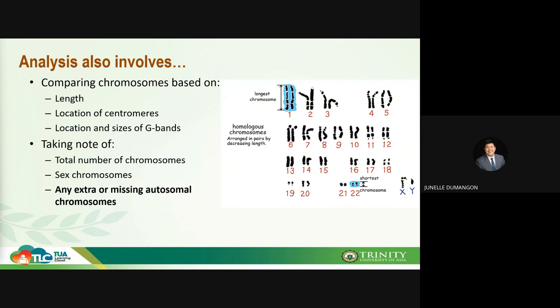We also take a look at the location of the centromere, which separates the Q arm and the P arm. When we talked about chromosomal anatomy, we mentioned terms such as acrocentric and telocentric chromosomes — examples of chromosomes with different centromere locations. A karyotype can also tell us the location and sizes of the G-bands, which are the numbering of the genes on the chromosome. In total, we take note of the total number of chromosomes, the sex chromosomes, and if there are any extra or missing autosomal chromosomes — those are chromosomes one to 22.